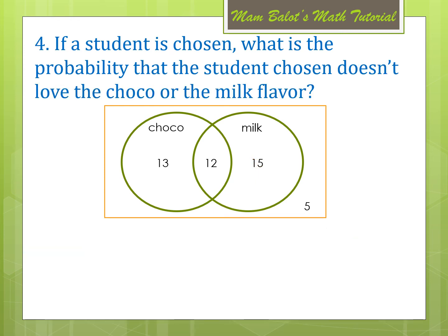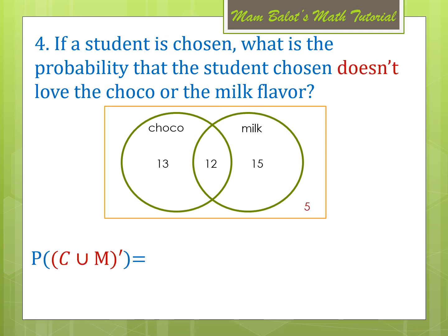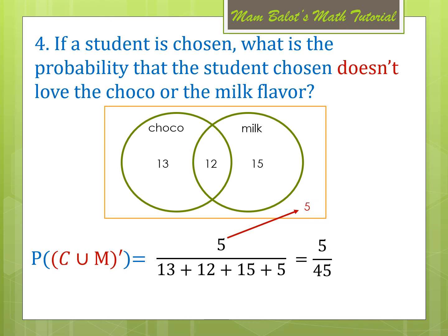Number 4: if a student is chosen, what is the probability that the student chosen doesn't love the choco or milk flavor? Since we have the word doesn't, it refers to a complement — specifically the complement of C union M. All the numbers outside the circle is 5. So, we have 5 over all the students surveyed — 5 over 45, which is equal to 1 over 9.